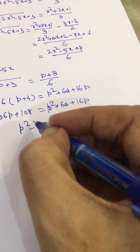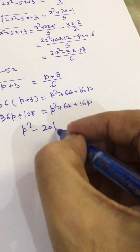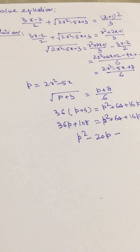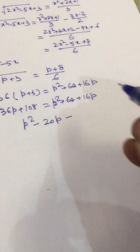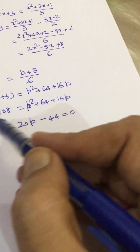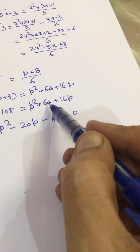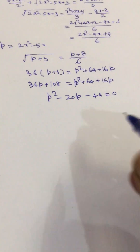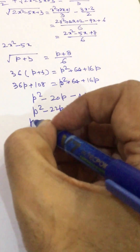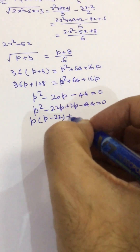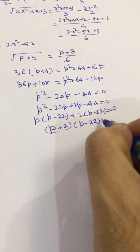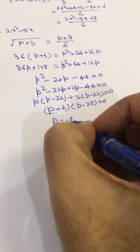This we can write as p squared minus 20p minus 44 equal to 0. We can factor this as p minus 22 equal to 0 or p plus 2 equal to 0, giving us p equal to minus 2 and p equal to 22.